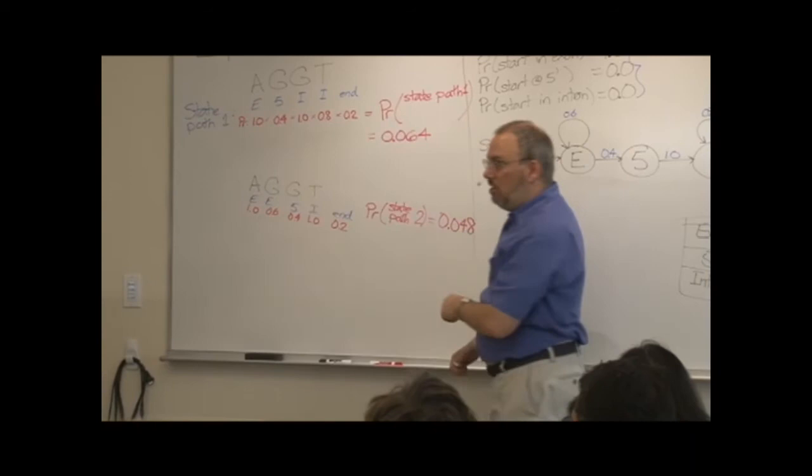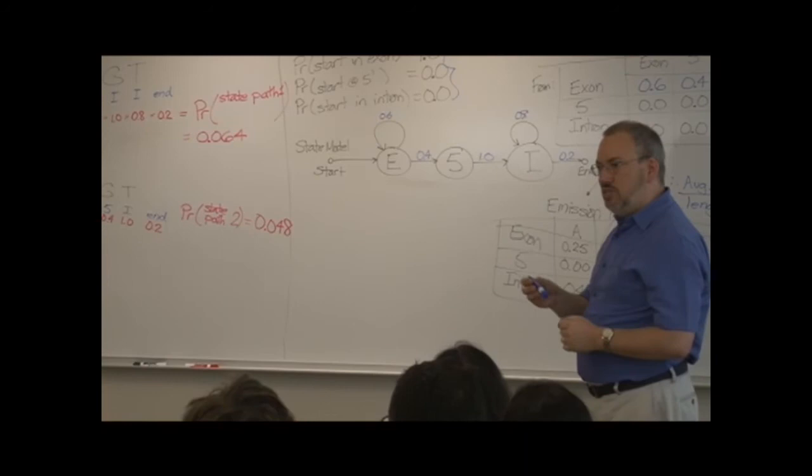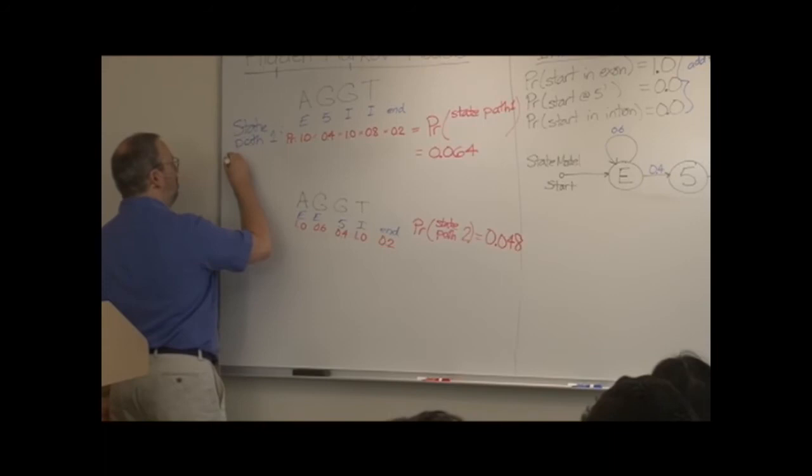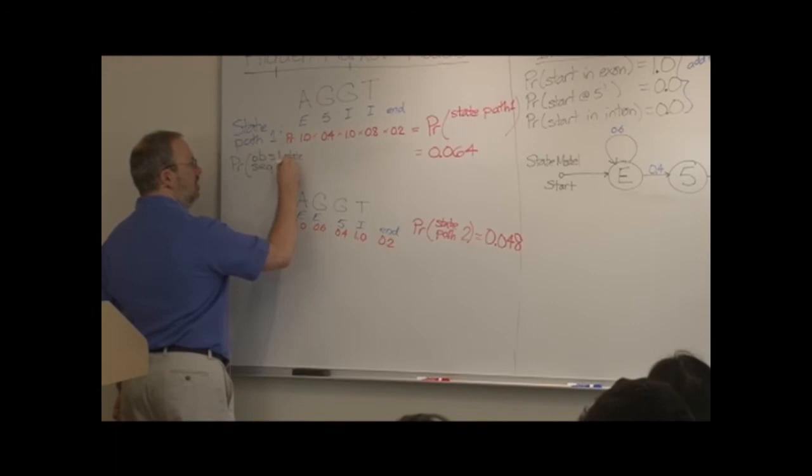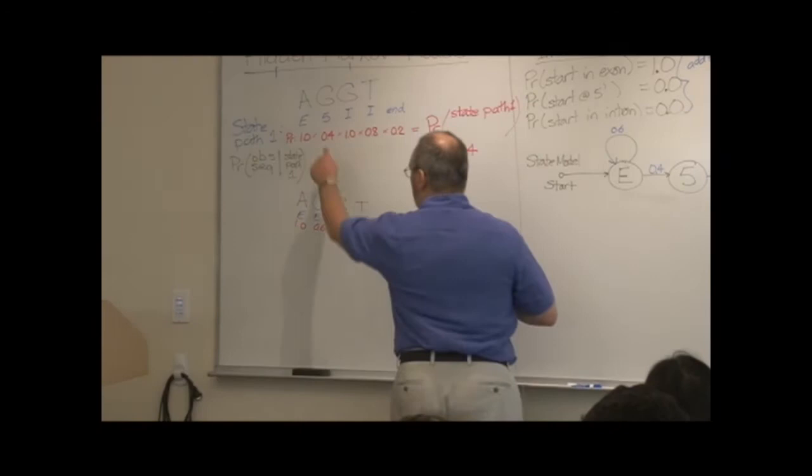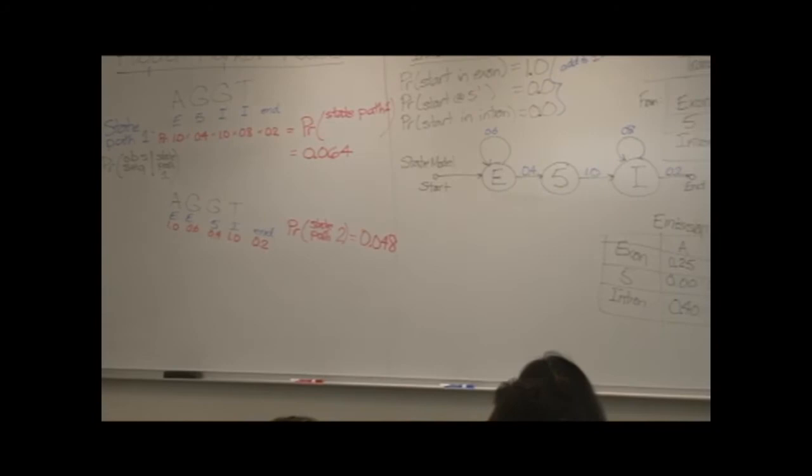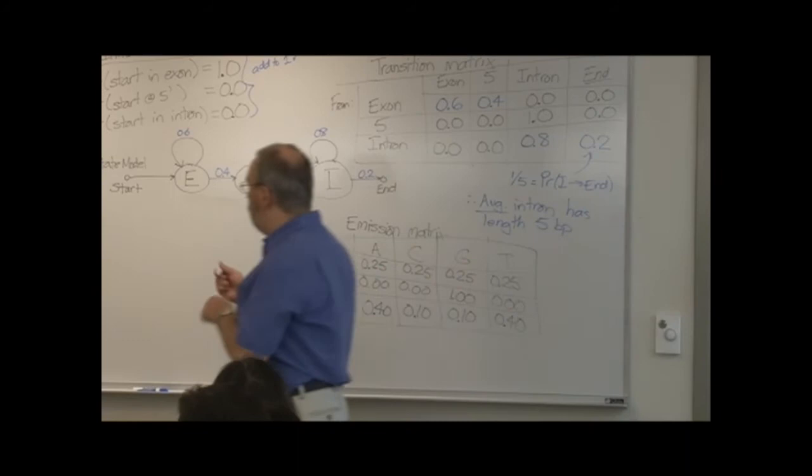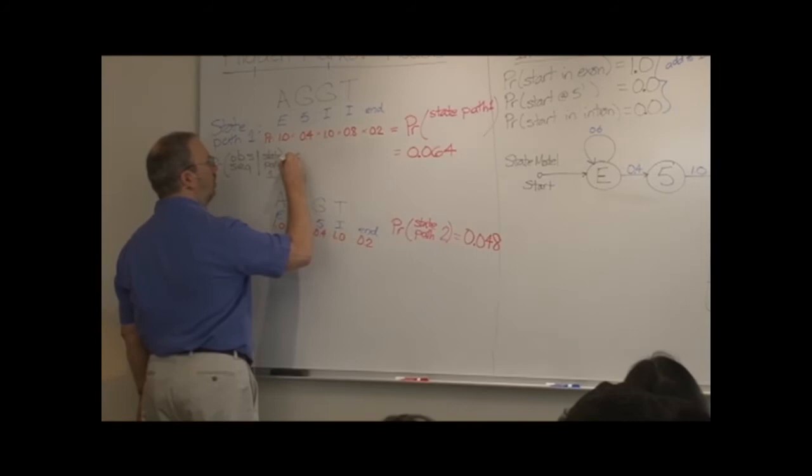This is just the probability of getting this state path. But now I want to ask, if we did get that state path, what's the probability of getting the actual sequence we did? So the probability of the observed sequence given state path one... So if this first nucleotide is in an exon, what's the probability in that exon of emitting an adenine? 0.25. That's what we described earlier in our emission matrix.